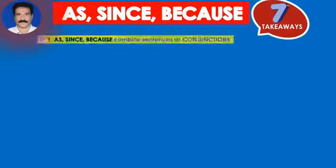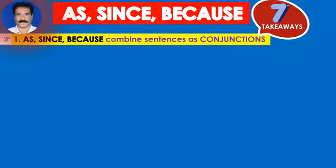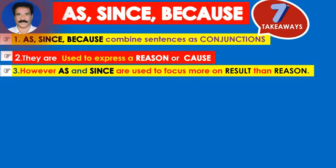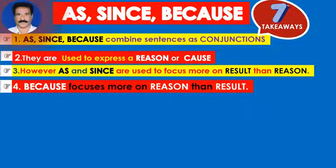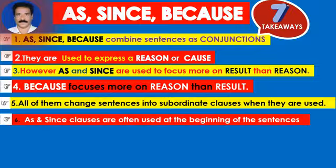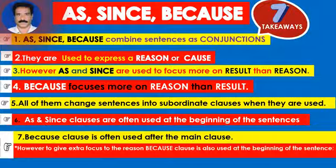Seven takeaways: As, since, because combine sentences as conjunctions — they are used to express a reason or cause. However, as and since are used to focus more on the result than the reason, while because focuses more on the reason than the result. All of them change sentences into subordinate clauses when used. As and since clauses are often used at the beginning of sentences. The because clause is often used after the main clause; however, to give extra focus to the reason, the because clause is also used at the beginning of the sentence.